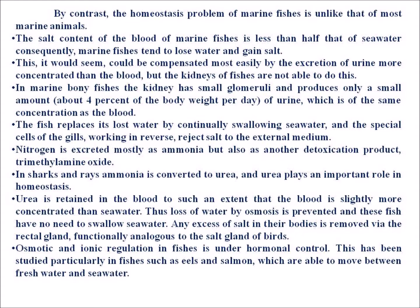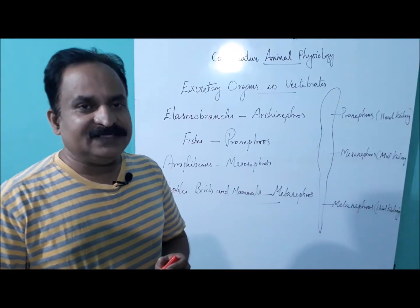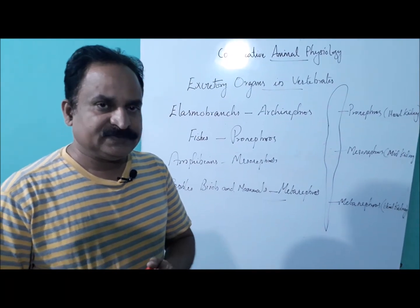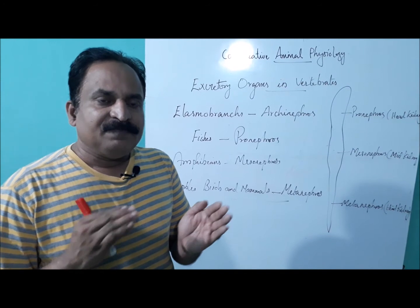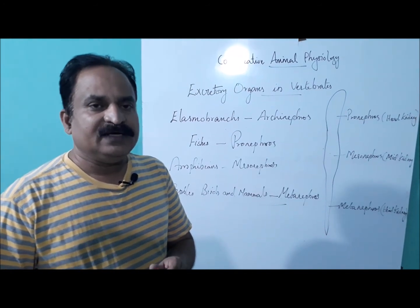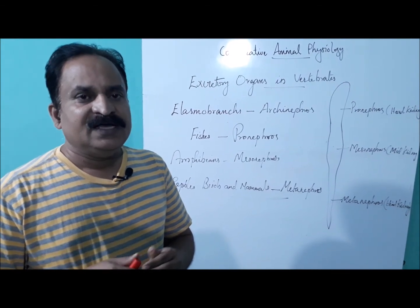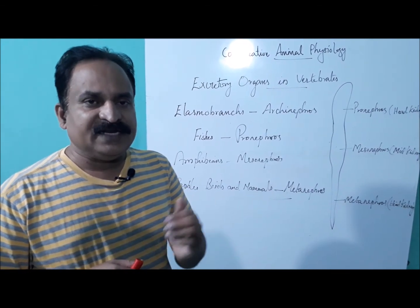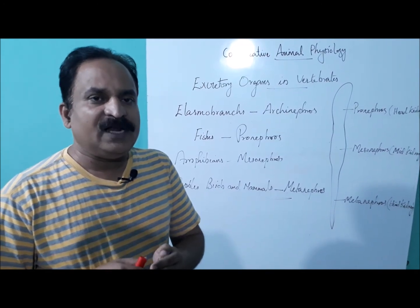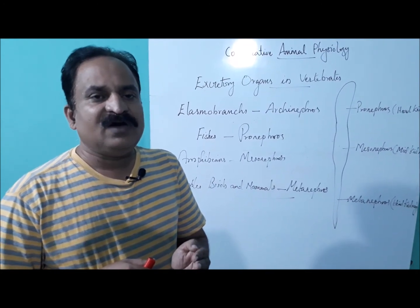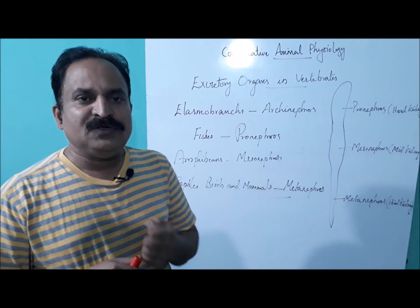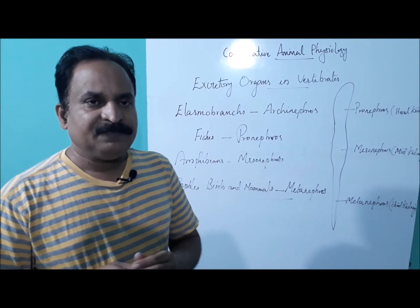This has been studied particularly in fishes such as eels and salmon, which are able to move between freshwater and seawater. In amphibians, the kidney is mesonephrose. Even though the kidney filters urea much more in terrestrial amphibians, rectal glands help to retain water. When the amphibians are on land, the water from the rectal gland can be utilized for the body functioning.